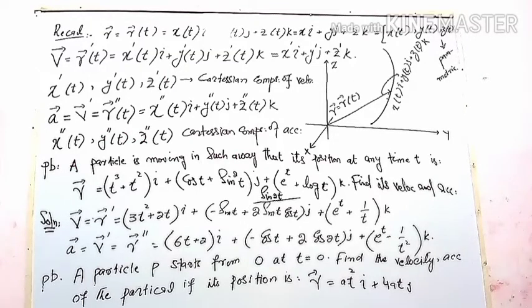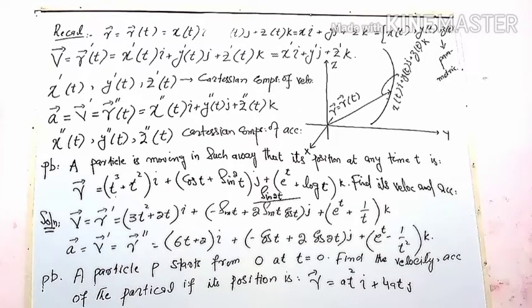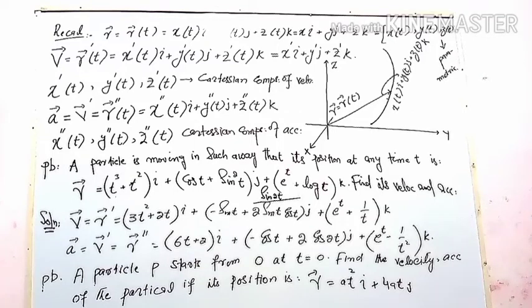Consider a problem where a particle is moving such that its position at any time t is given by: r equal to (t cubed plus t squared) i along the x-axis, plus (cos t plus sin squared t) j along the y-axis, plus (e to the t plus log t) k along the z-axis. The x, y, and z components are each given by those respective functions.